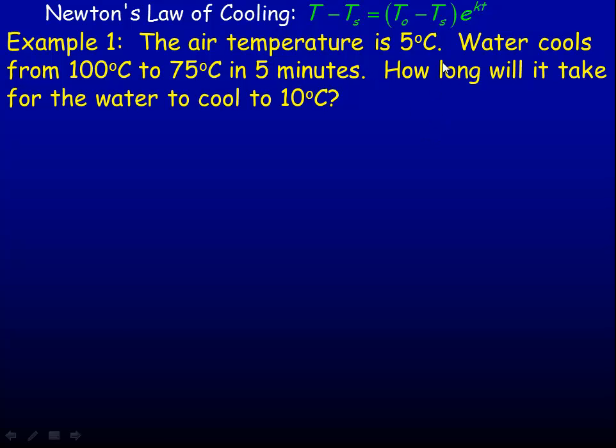We're not given the constant K, so we have to find that first. Here's Newton's law of cooling. We'll fill in the ambient temperature, which is 5 degrees. The initial temperature was 100, and the surrounding temperature was 5, so 100 minus 5 is 95.